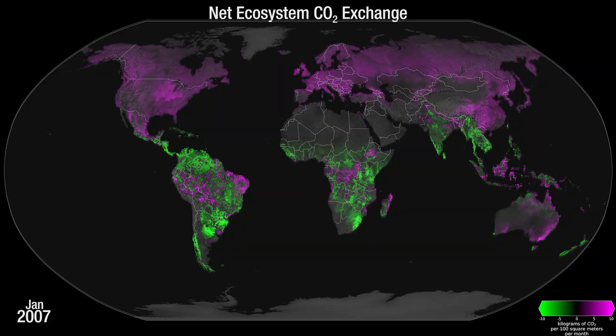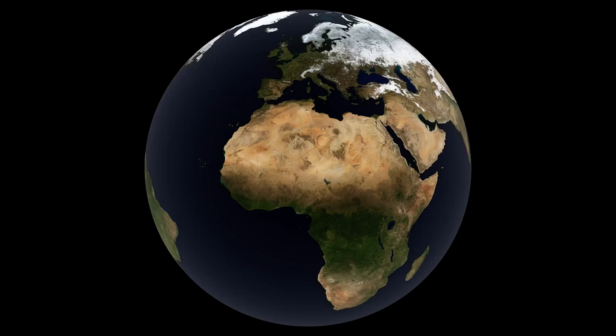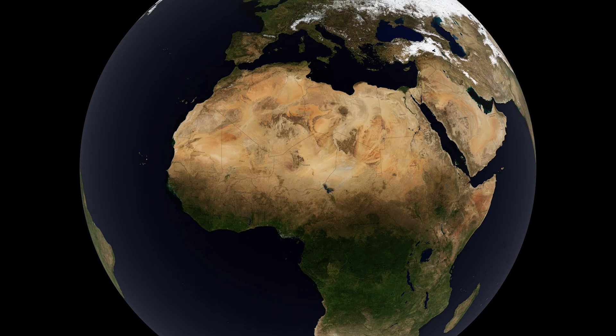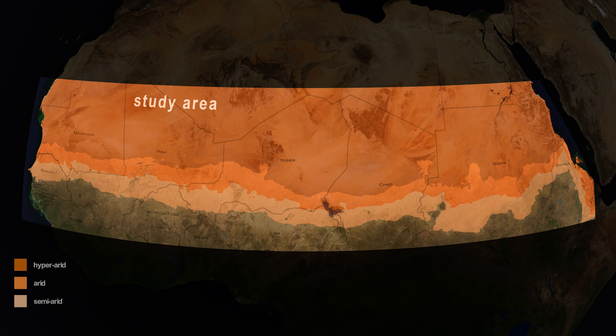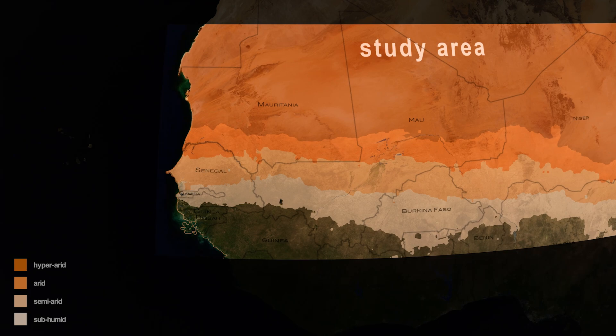In the study, we used a large volume of commercial satellite data — hundreds of thousands of commercial satellite images at the 50 centimeter scale to map trees, to identify trees in a semi-arid region from the Atlantic Ocean to the Red Sea in Africa. What we actually mapped were tree crowns.